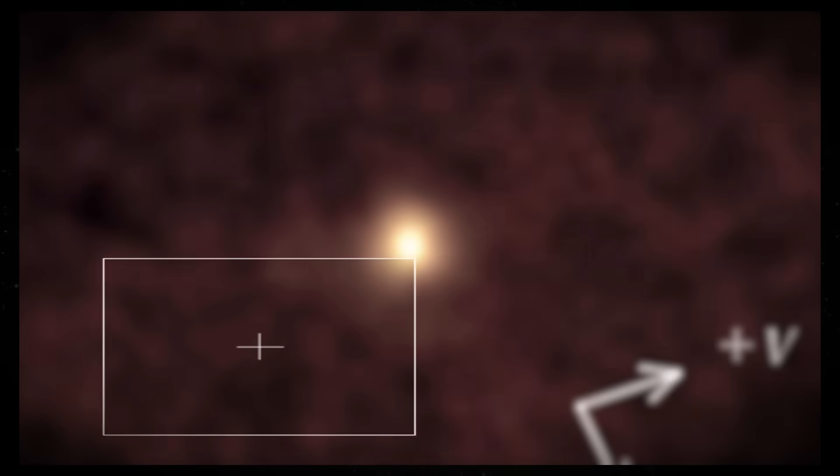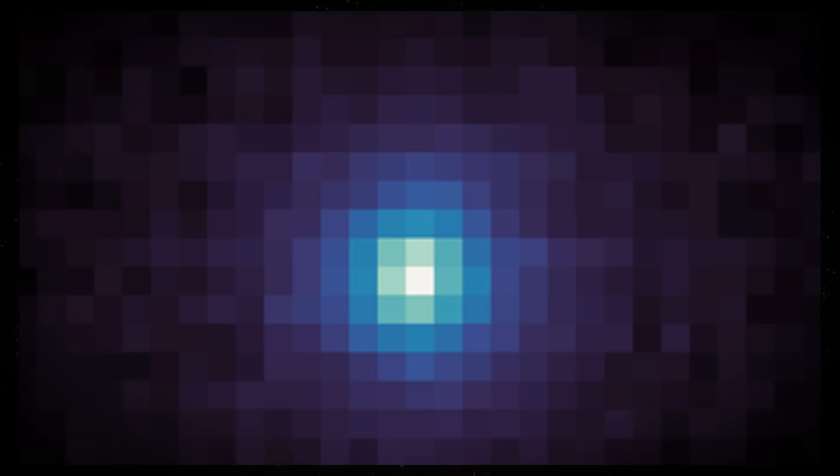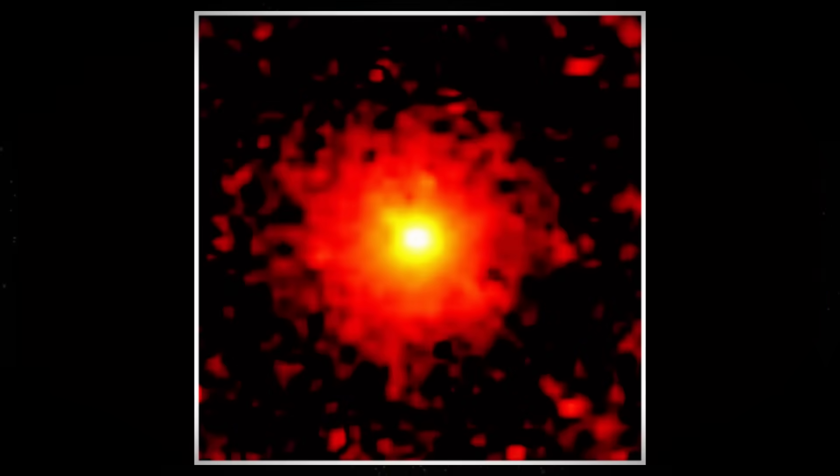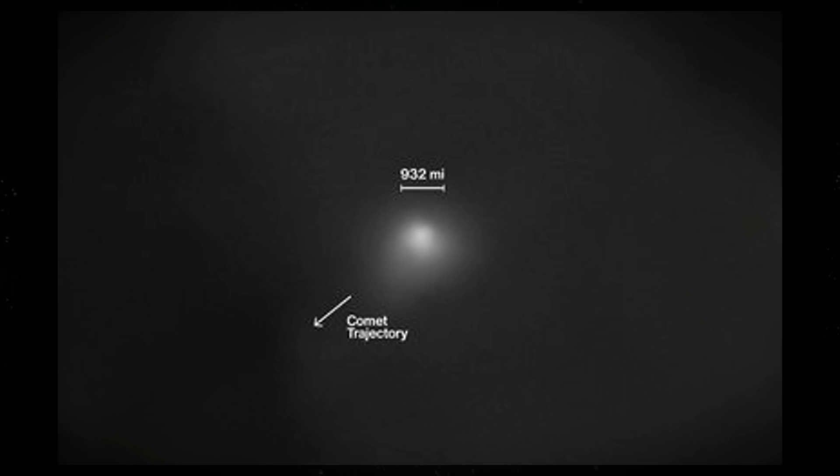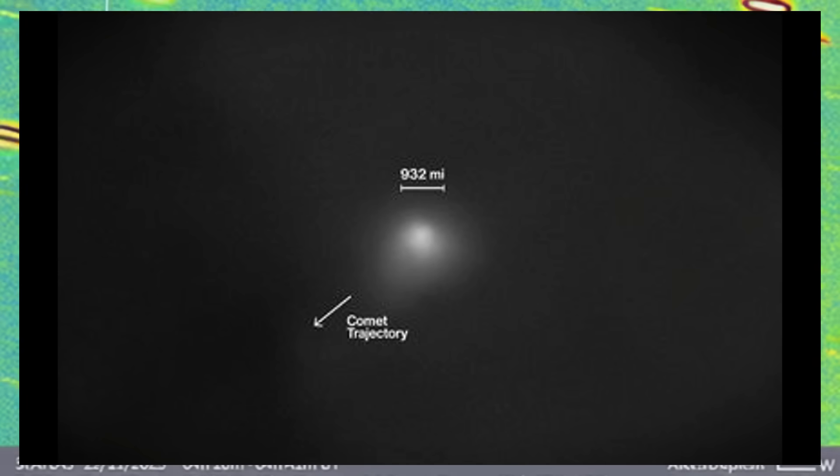If it's natural outgassing that produced this precise result, then we're observing comet physics we've never seen before. This would revolutionize our understanding of how interstellar objects behave and could teach us fundamentally new things about celestial mechanics.